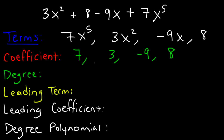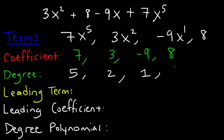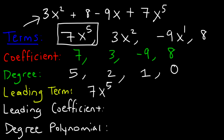The degree of each term: the first has exponent 5 so it's degree 5, the second is degree 2, the next has an invisible exponent of 1, and the constant term is degree 0. The leading term is the term with the highest degree — it's 7x to the fifth. The leading coefficient is 7, and the degree of the entire polynomial is 5.